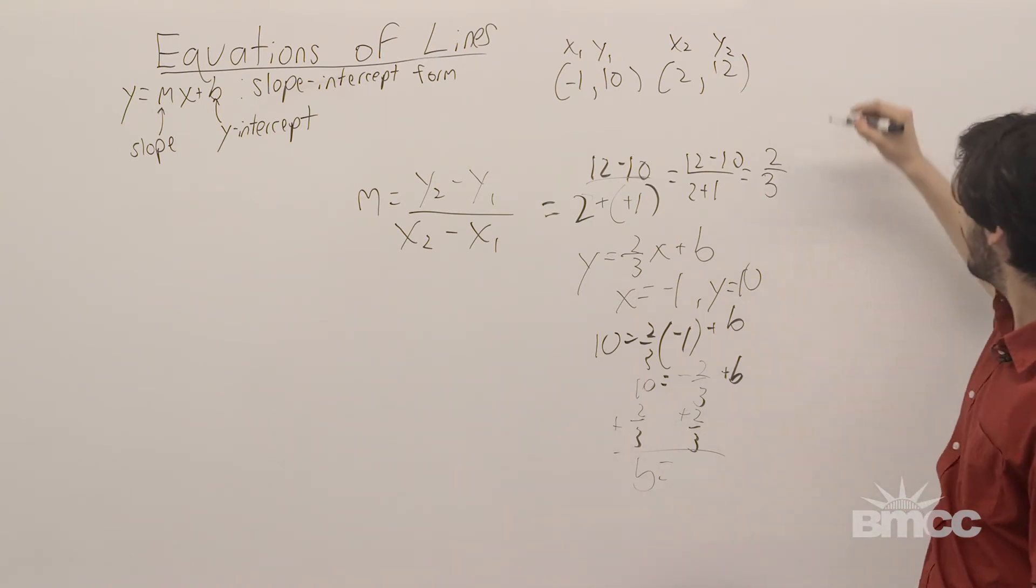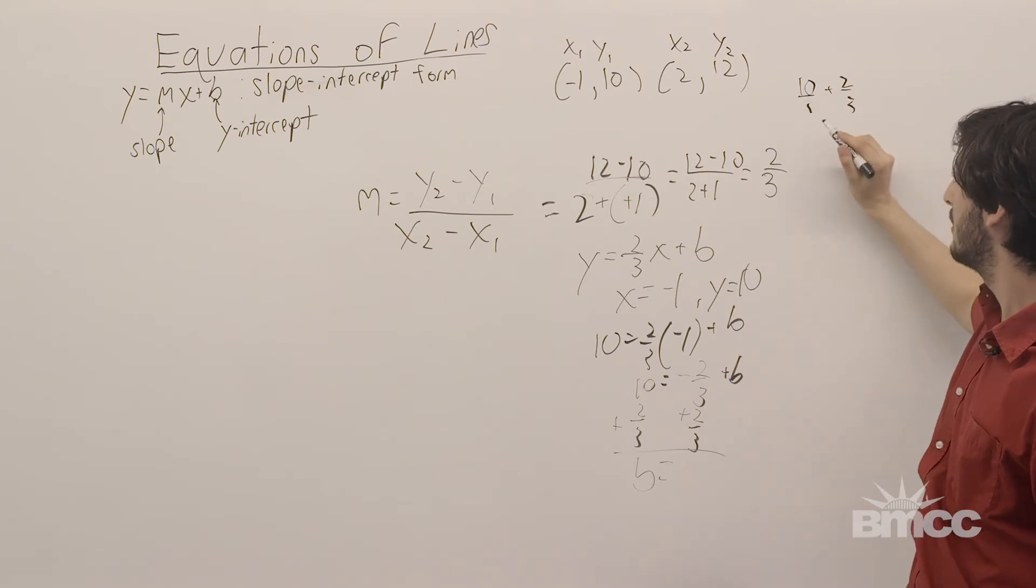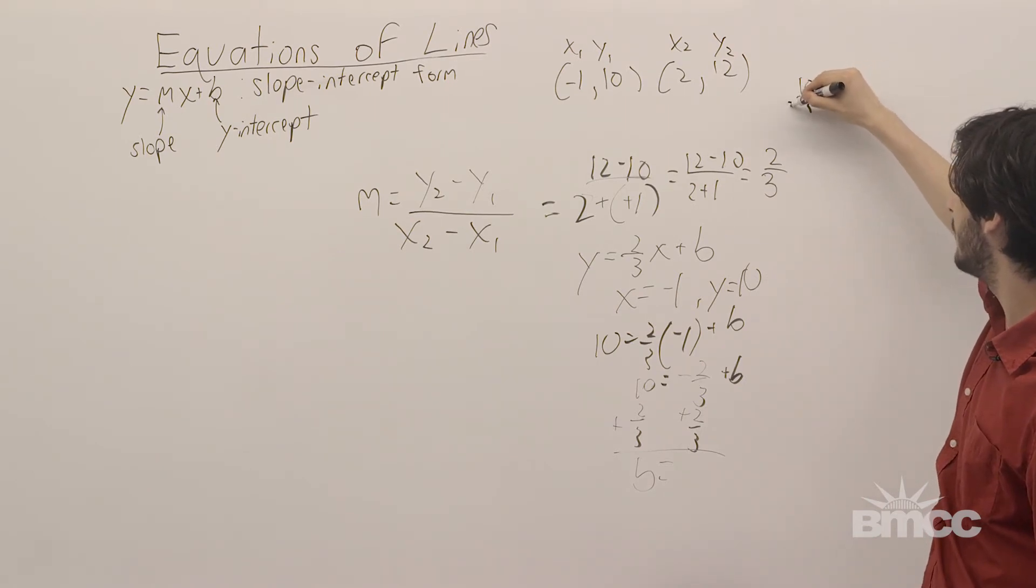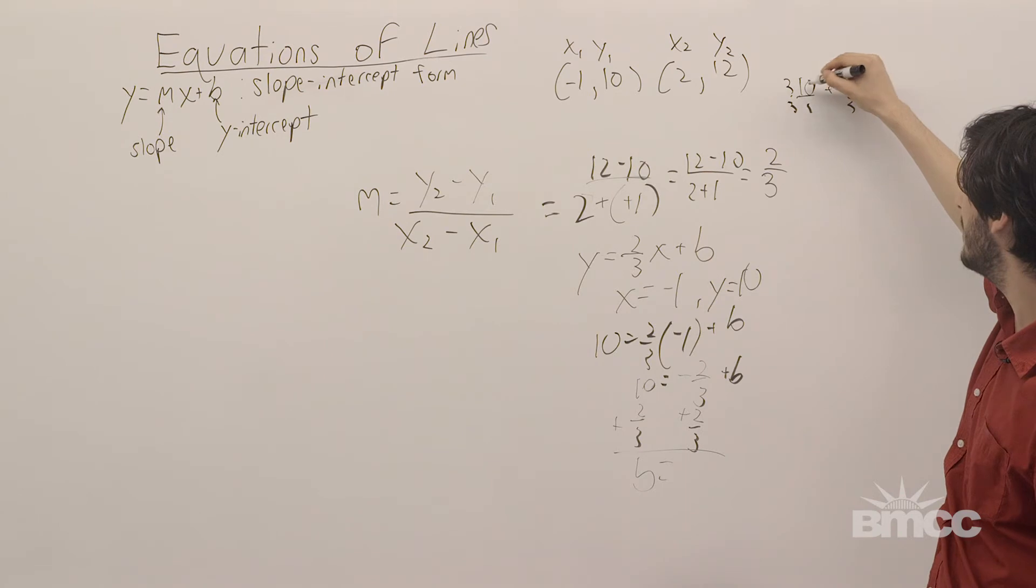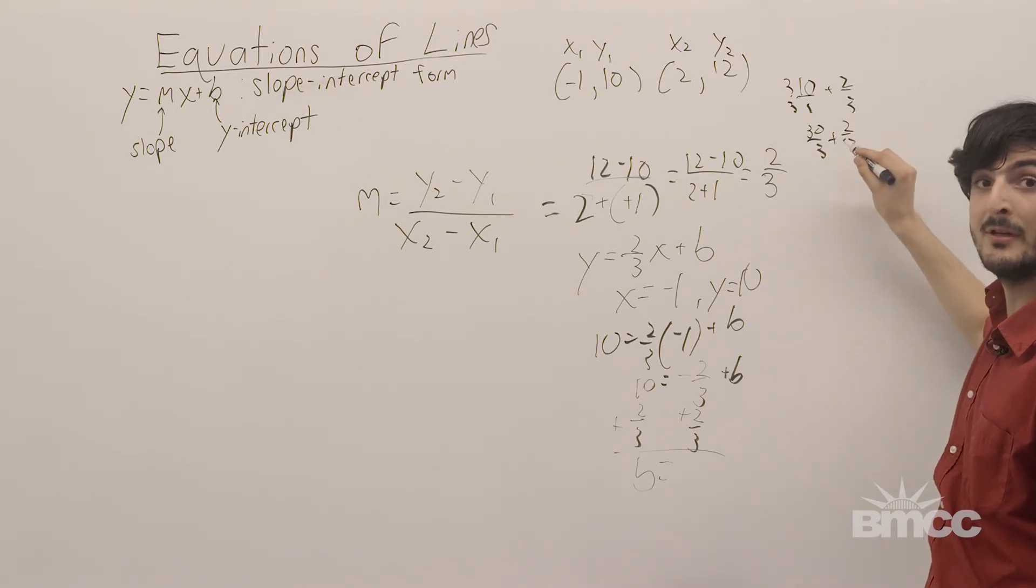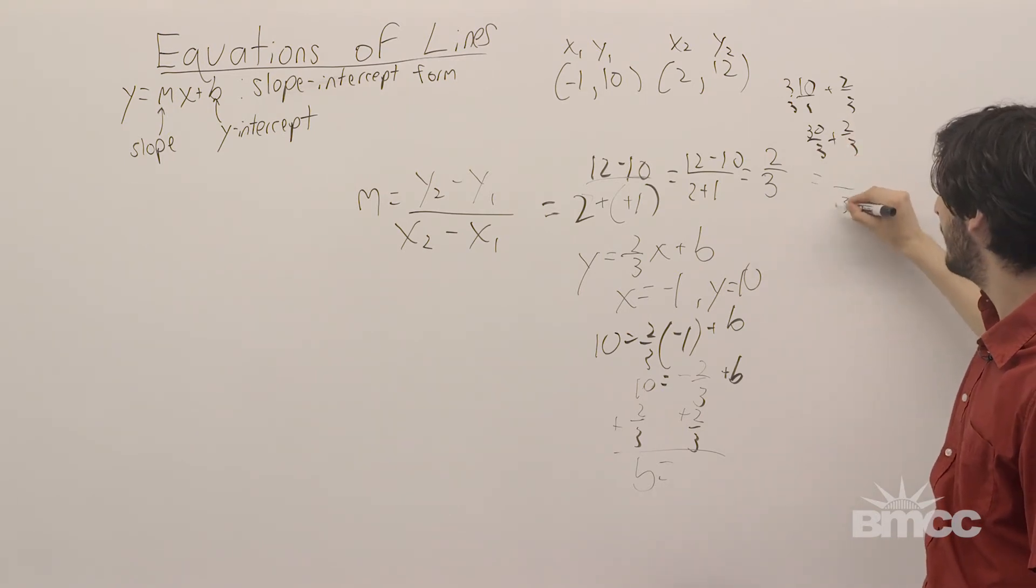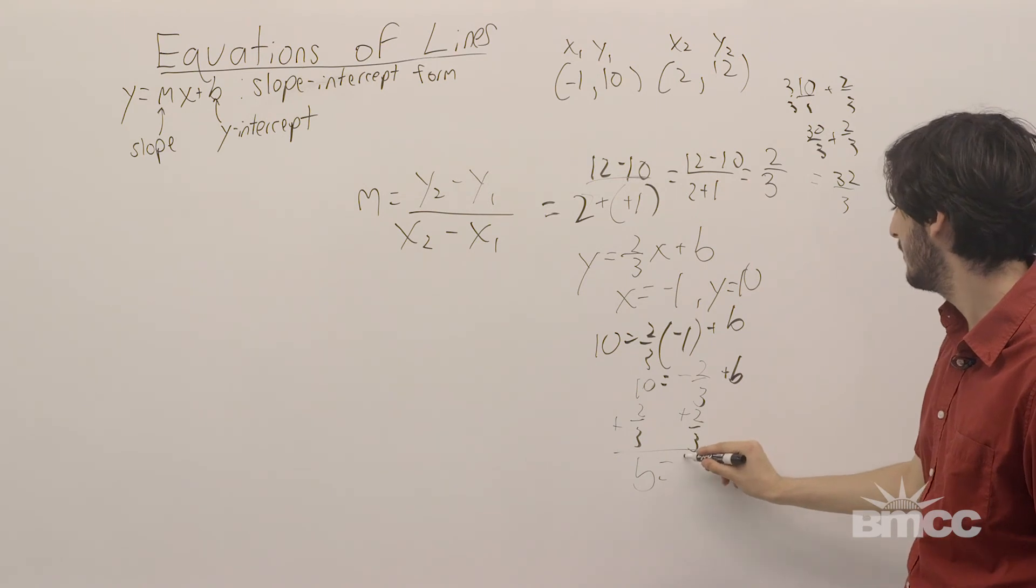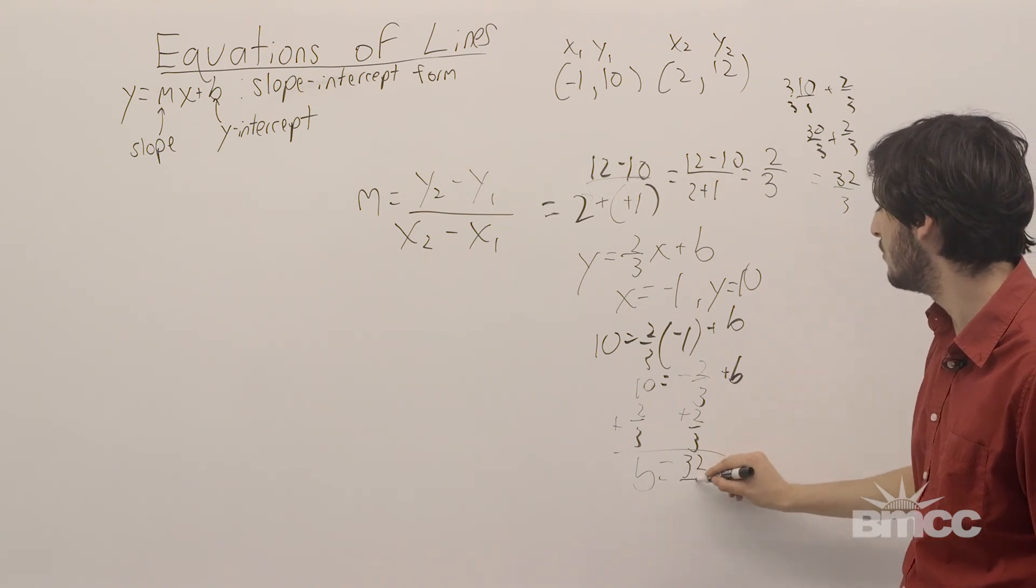And just to add those two, 10 over 1 plus 2 thirds, the least common multiple of 1 and 3 is 3. So, here, we want a denominator of 3. So, we multiply top and bottom by 3 to get 30 over 3 plus 2 over 3. Now, since the denominators are the same, we can keep the denominator, which is 3, and add the numerators to get 32 over 3. So, b is equal to 32 over 3.